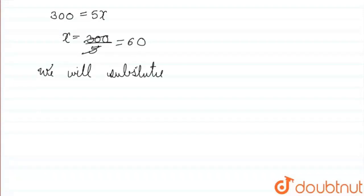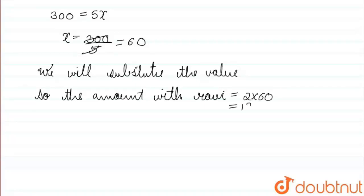We will substitute the values. So the amount with Ravi will be 2 times 60, so it will be 120.